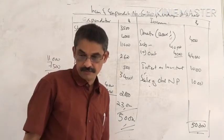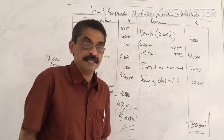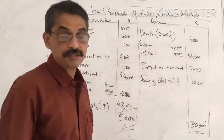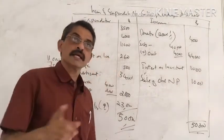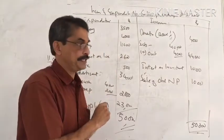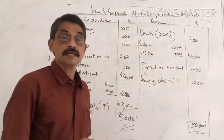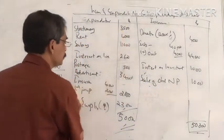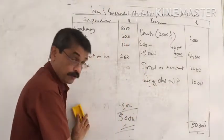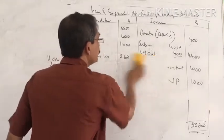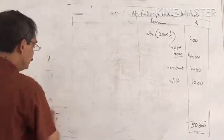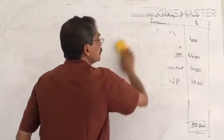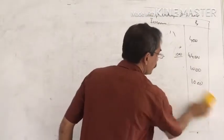Now we are going to prepare the opening balance sheet. On the asset side, we have cash balance and bank balance. There is also interest on loan, meaning there is a loan liability. We have a building as of the opening date. So we construct the opening balance sheet with these items.